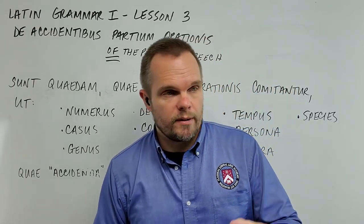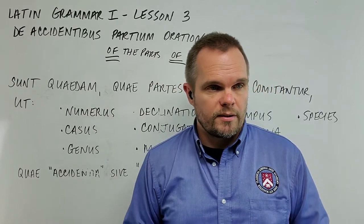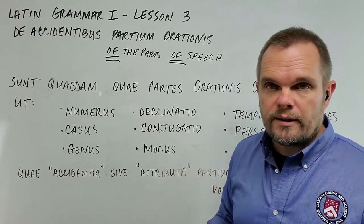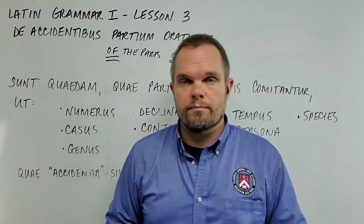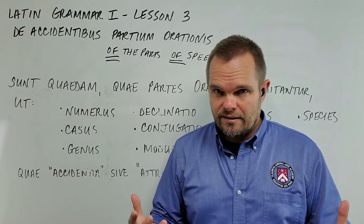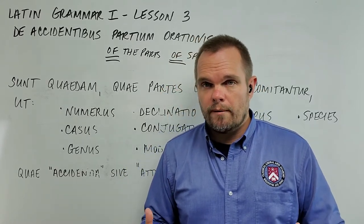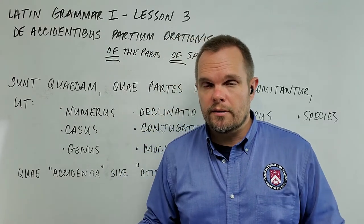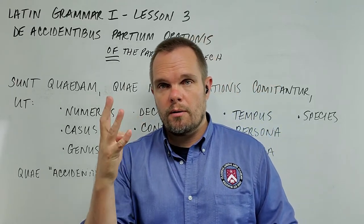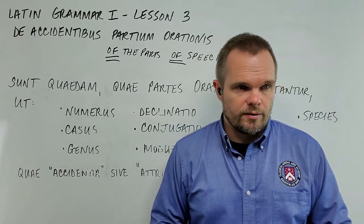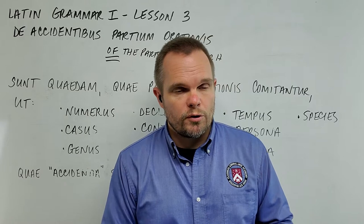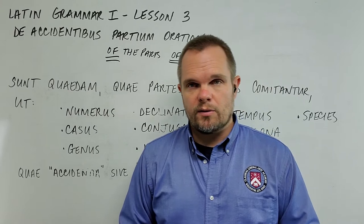Rule six reads: modi verborum triti et comunes sunt quatuor. Modi means moods — modus is the singular form. Verborum means of verbs. Triti et comunes means used and common — think 'tried and true' — commonly used by the authors in Latin. Sunt quatuor means they are four. The four moods of verbs common among Roman writers are: indicativus, the indicative mood; imperativus, the imperative mood; conjunctivus, the conjunctive mood; and infinitus, the infinitive mood.